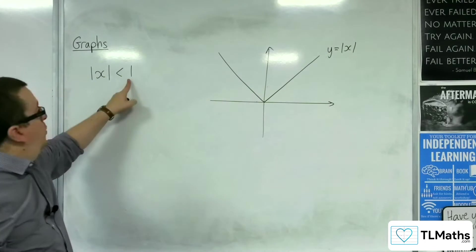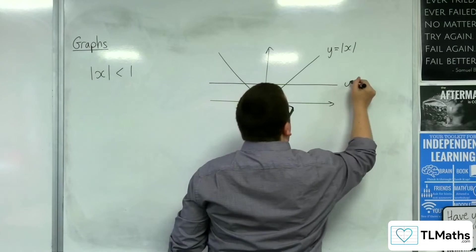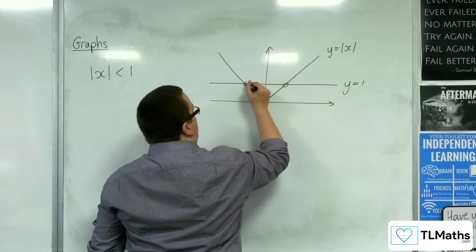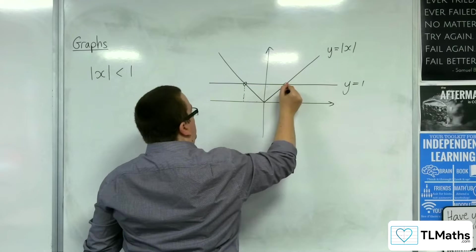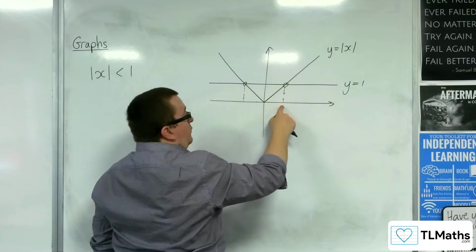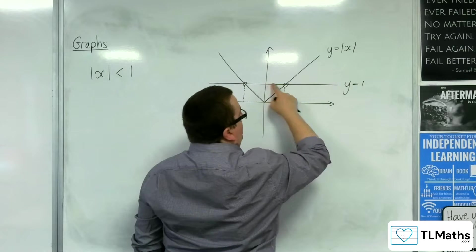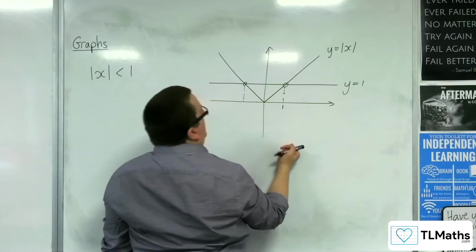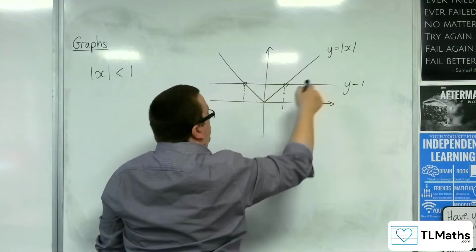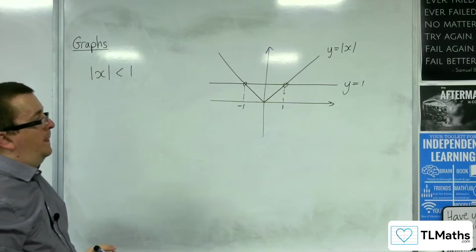And then we would sketch y equals 1, which is a horizontal line, and you can see that there are two intersection points here and here. So this point here, the x value of that point will be where y equals x intersects y equals 1, which is just going to be 1, and this is the line where y equals minus x intersects y equals 1, and so minus 1 would be the x value there.